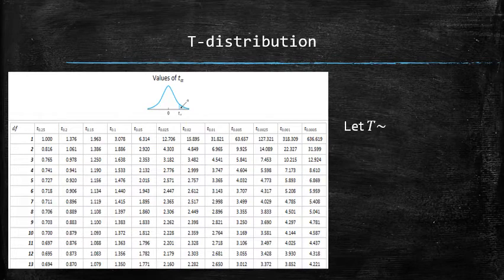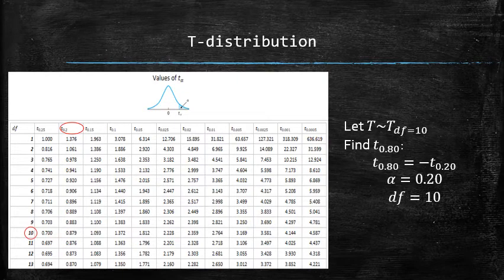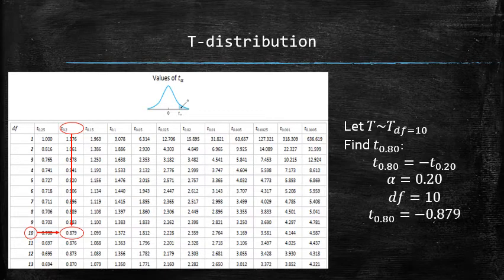Let t be a random variable that has t-distribution with 10 degrees of freedom, and let's find t sub 0.80. Since t-distribution is symmetric about 0, we can use the property of alpha notation and conclude that t sub 0.80 is equal to the opposite of t sub 0.20, which we find by identifying alpha and the degrees of freedom, then reading the t sub 0.20 from the table and finding the desired t sub 0.80 as the opposite of t sub 0.20.